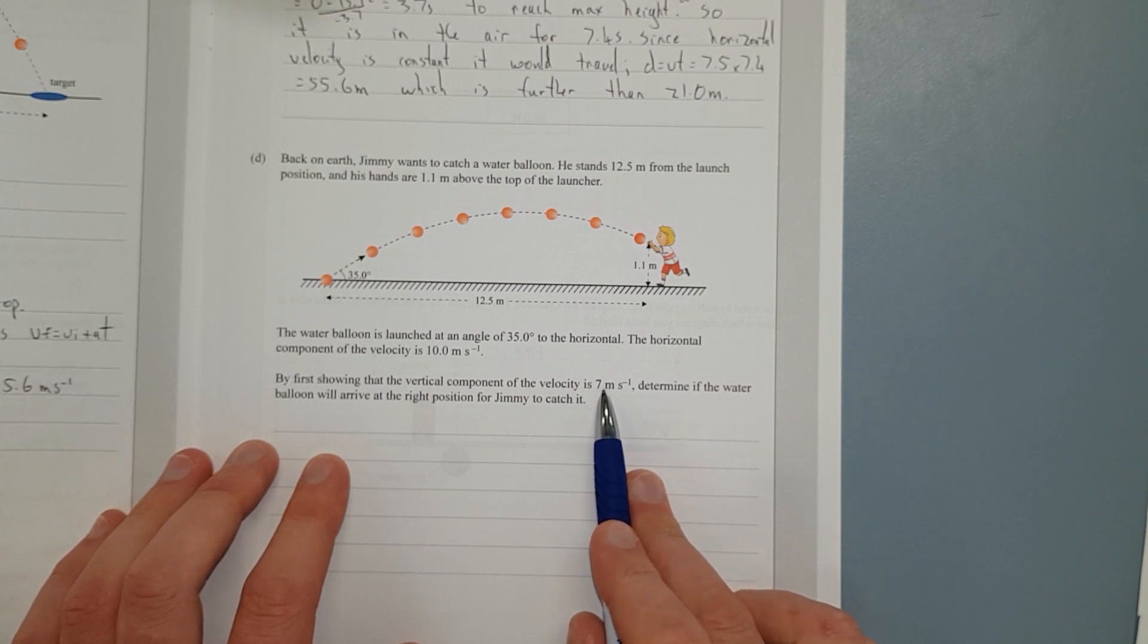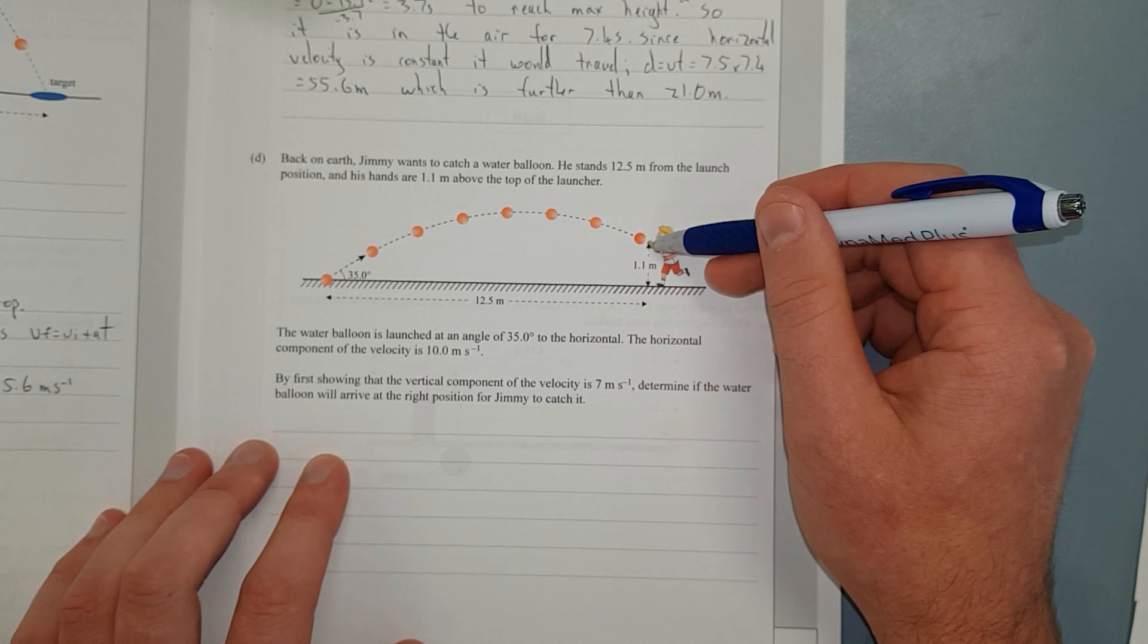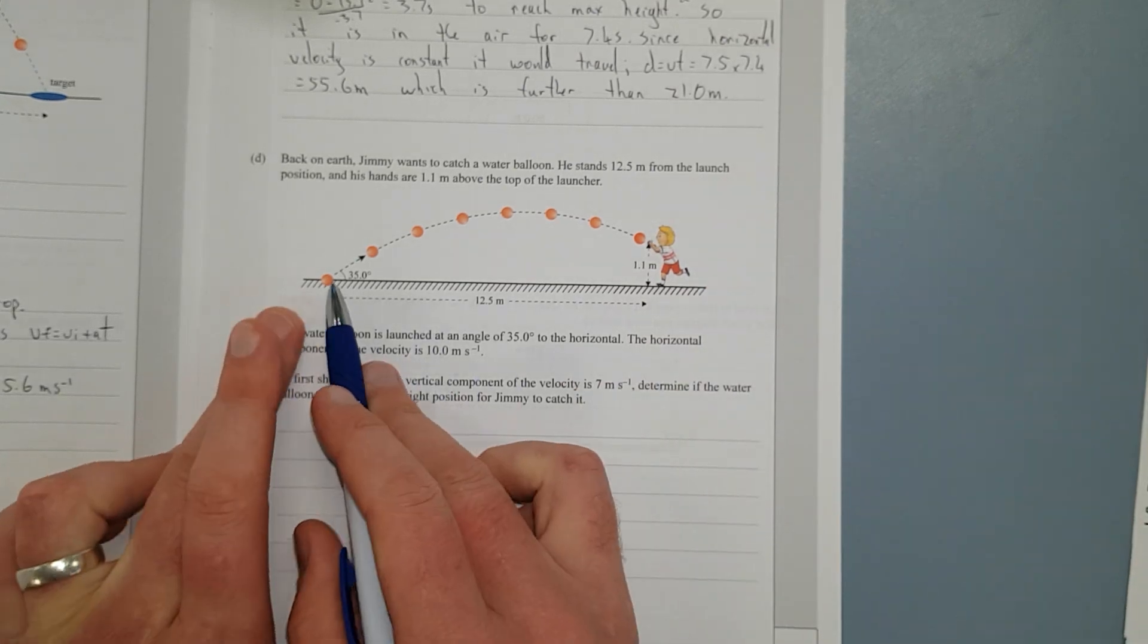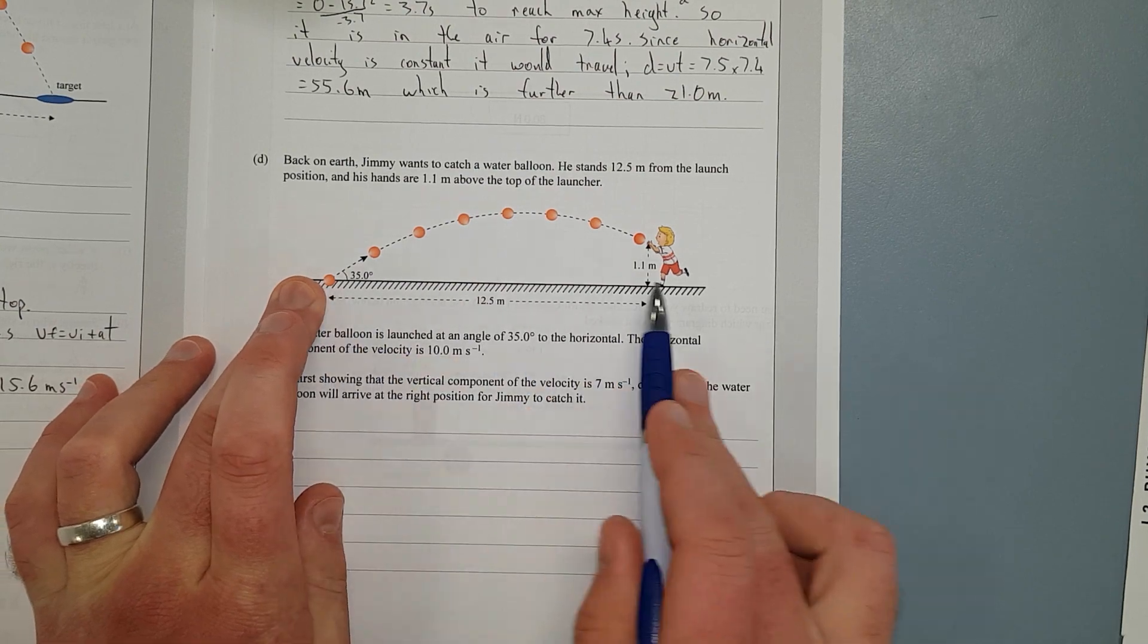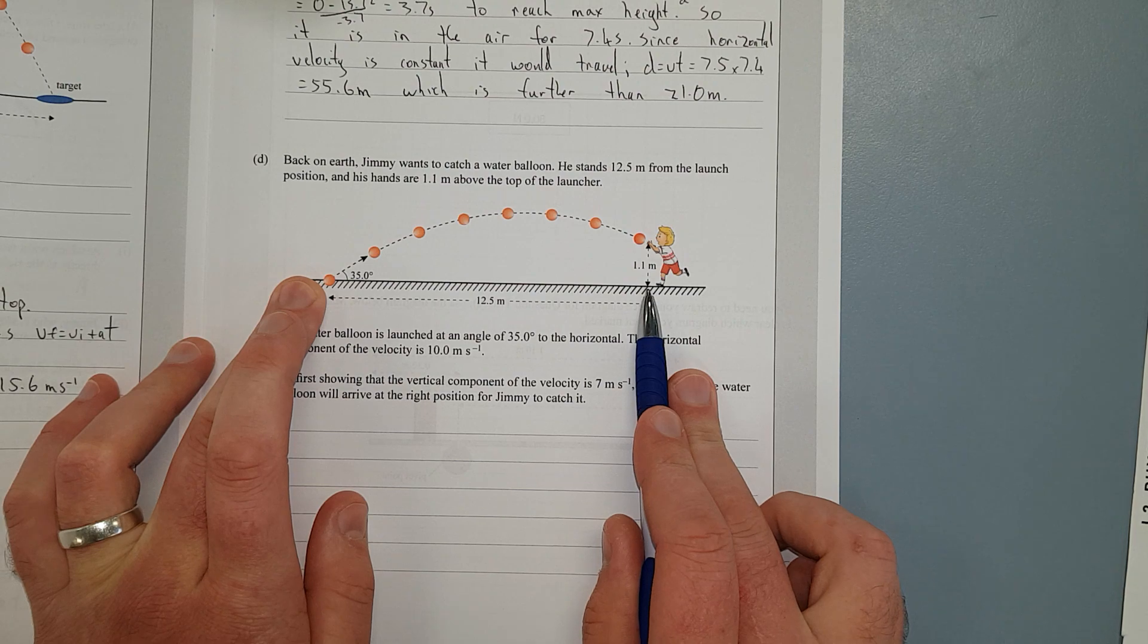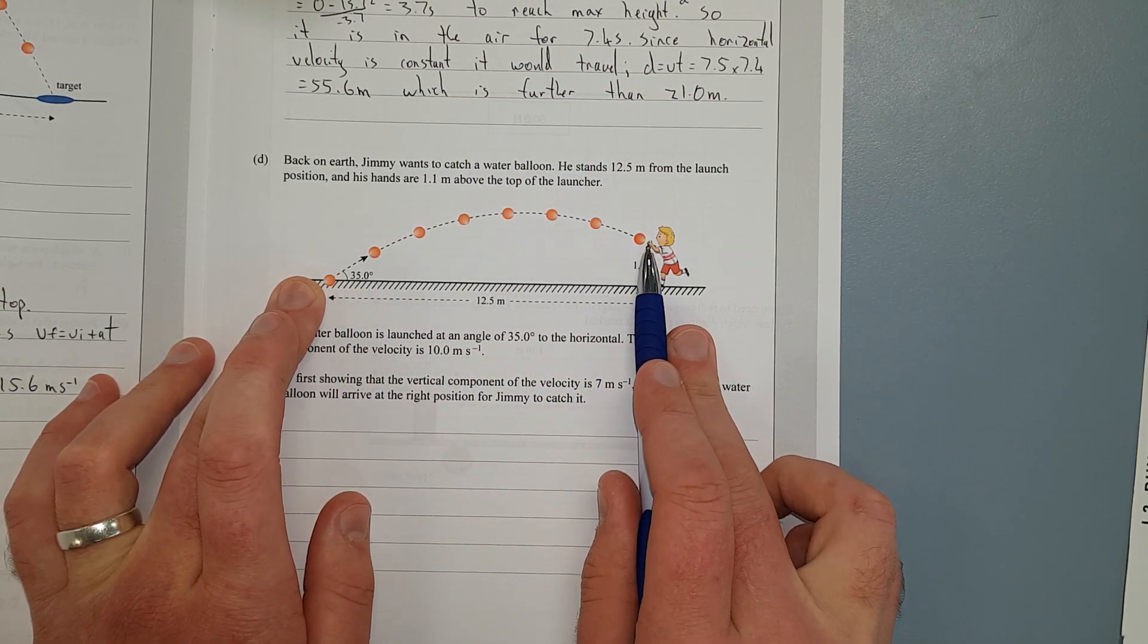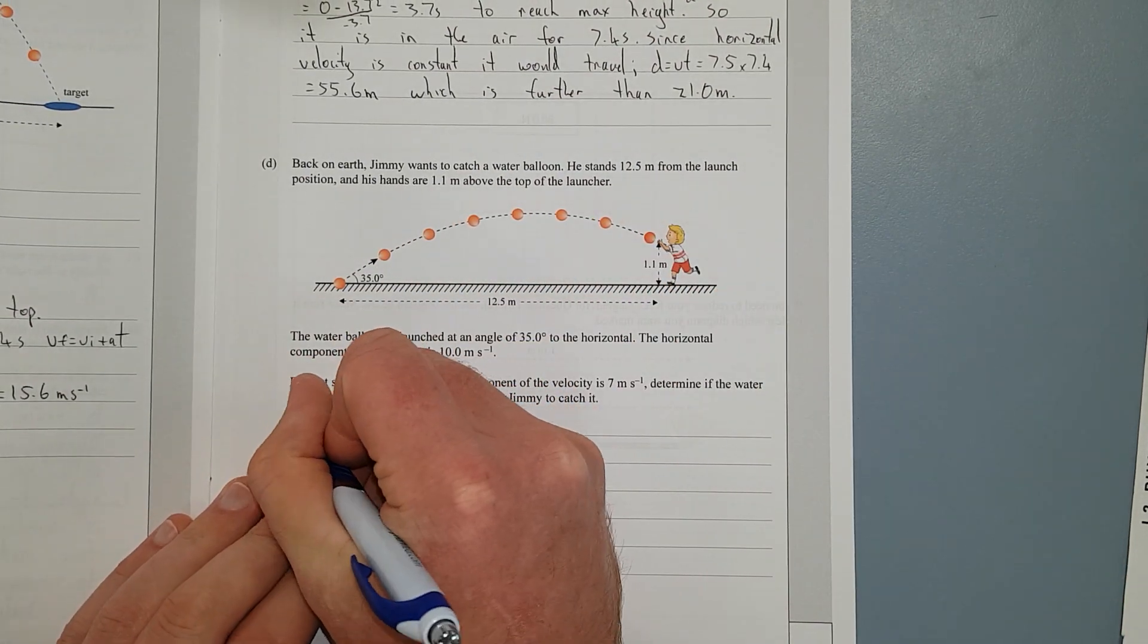Secondly, we need to figure out the time it takes to get to this height. And then once we have that time, we need the time it takes to get from here to here. We need to find the time it takes to go from here to here, and we use the horizontal velocity component to find that time. And then we just plug that time into the position formula, and that'll tell us our position at that time. It'll make sense as I go through it. So let's just figure out the vertical component of velocity first.